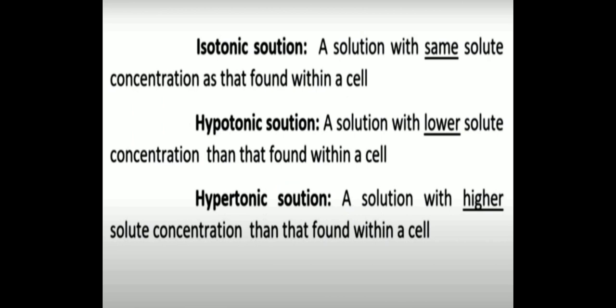Before knowing that difference, it is very important that we must be aware of isotonic solution, hypotonic solution, and hypertonic solution. We have discussed about it, but just for a quick revision I am explaining it again. Isotonic solution is the solution where the same solute concentration is found on both sides of the cell — inside and outside. In a hypotonic solution, the concentration of the solution inside the cell is lower than the outside. In a hypertonic condition, the solution present inside the cell has higher concentration than outside, so the outside concentration is lower.